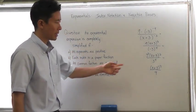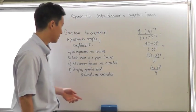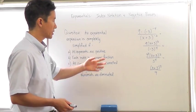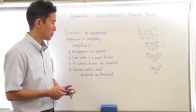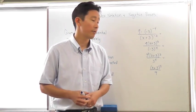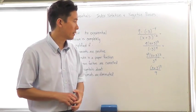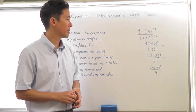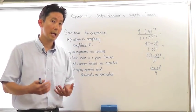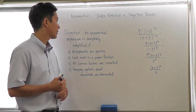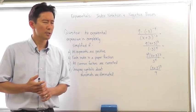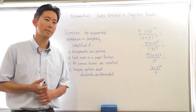All exponents are positive, each index is a proper fraction with no rational fractions present, all common factors are cancelled, and the grouping symbols above the monomials are eliminated. You don't need to expand x plus three to the third because that is already in an elegant factored form. So there you go — index notation, negative bases. Starting from the beginning, making sure we know the terminology, notation, and rules, and knowing how to determine whether an exponential expression is completely simplified. Hopefully this is a review for most of you, and we'll see how you do next time. Bye-bye.